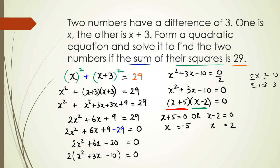Importantly, this question didn't specify positive or negative numbers, so there are actually two sets of answers. The first set: x = 2 and x + 3 = 5, so the numbers are 2 and 5. The second set: x = -5 and x + 3 = -2, so the numbers are negative 5 and negative 2. That's it for this session — if you have any questions pop them in the comments, and thanks for watching.